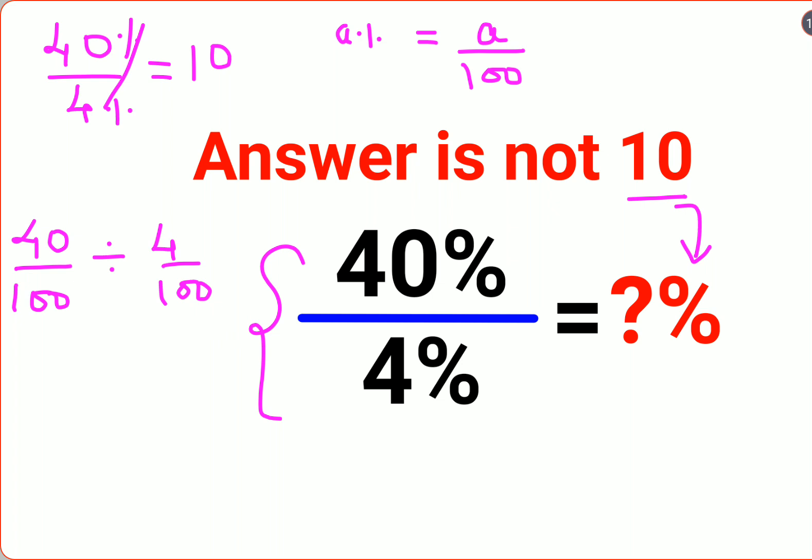Now in order to do division between two fractions, you always follow the rule of KCF. K stands for keeping the first number as it is. C stands for changing the division sign to multiplication and F stands for flipping or taking reciprocal of 4 upon 100, that is 100 upon 4.